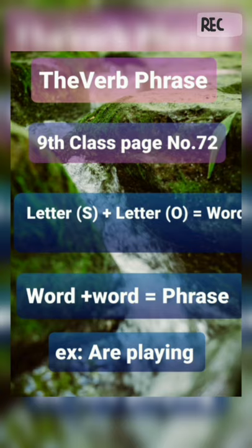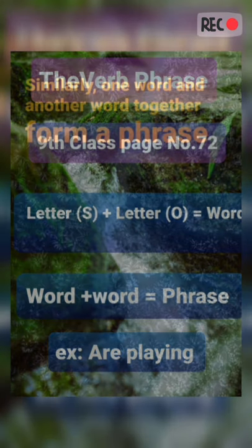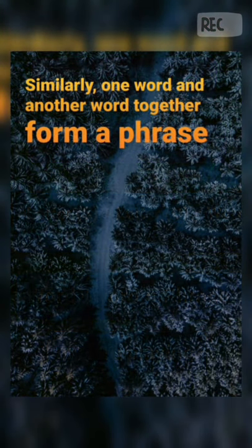Let us find out what the actual verb phrase is. To know about verb phrase, we first need to know about letters. For example, letter plus letter equals a word. S plus O equals 'so' — so is a word. Word plus word equals a phrase.